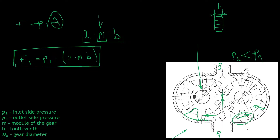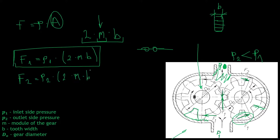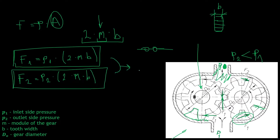Because we also have pressure on the outlet side — since the gear motors are linked in series with two motors for example — we still have pressure there. So we also have to find F2, the force opposing F1. F2 is equal to P2, the pressure on the outlet side, times the same area: 2 times M times B. So these two forces are important.